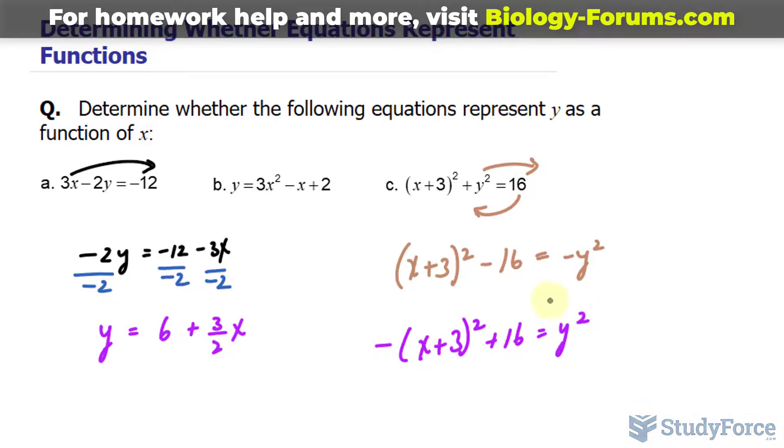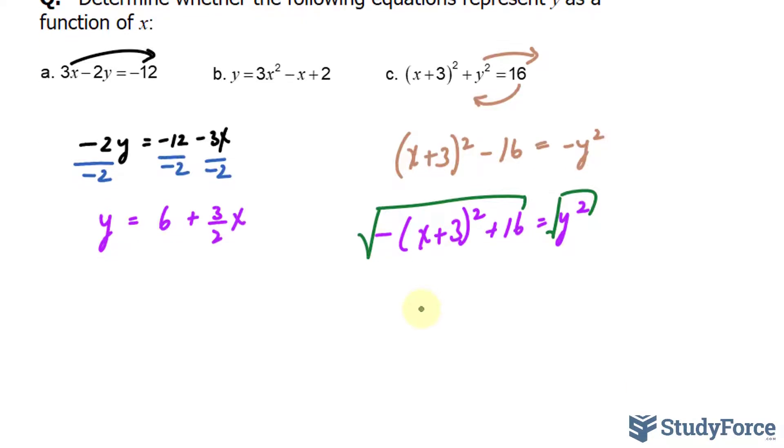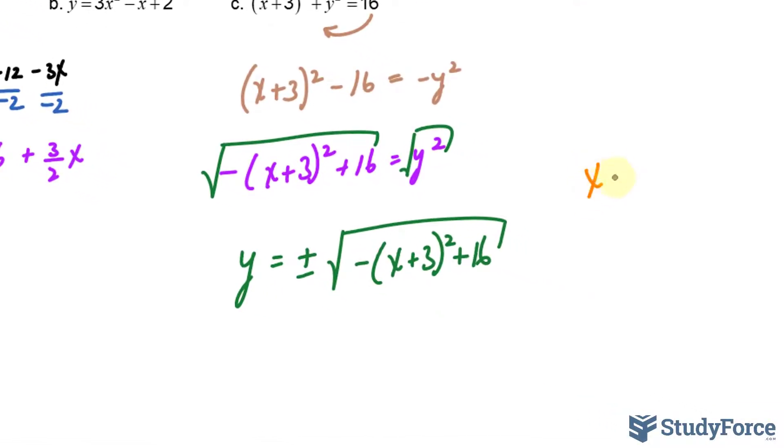Remember, we want to solve for y, so I'll square root both sides to get it isolated. And this gives me y is equal to plus or minus negative (x + 3)² plus 16. As you can see, because of this square root, if I were to substitute a value in for x, let's say the value is 0.